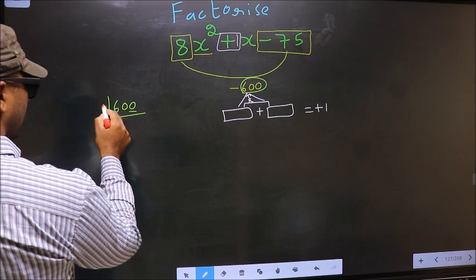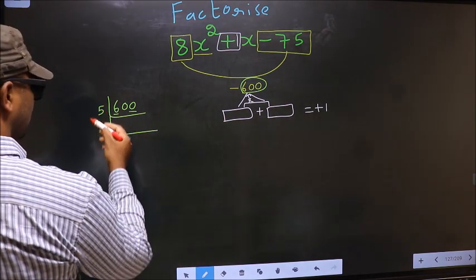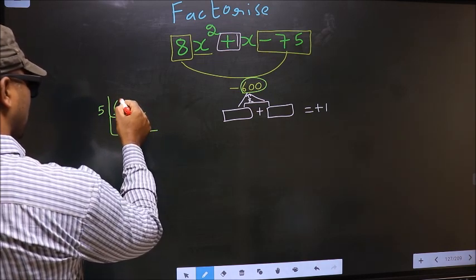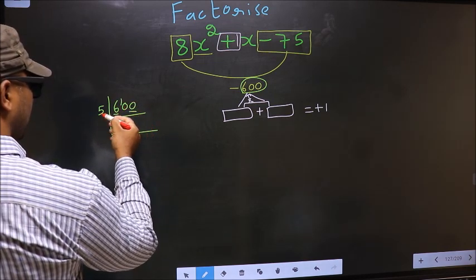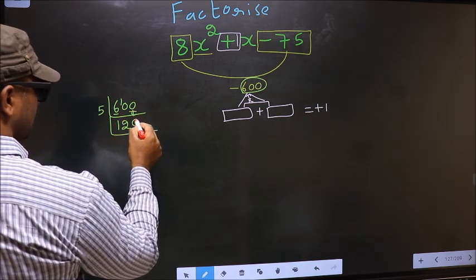The last digit 0, so take 5. The first number 6, a number close to 6 in 5 table is 5 once 5. 6 minus 5, 1, 1 carried forward 10. When do we get 10 in 5 table? 5 to 10. Now this 0 as it is down.